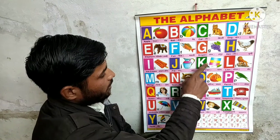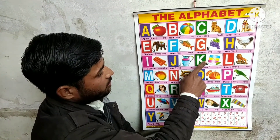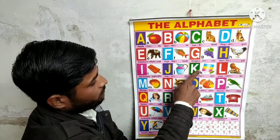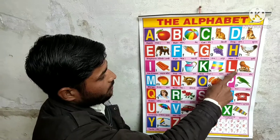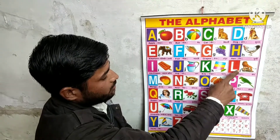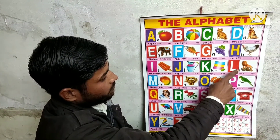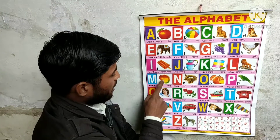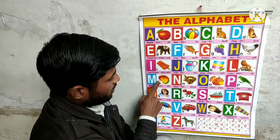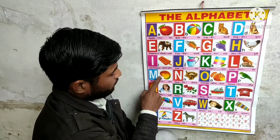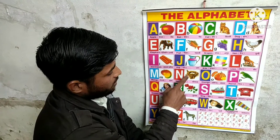K for kite, kite means patang. L for loin, loin means share. M for mango, mango means arm.